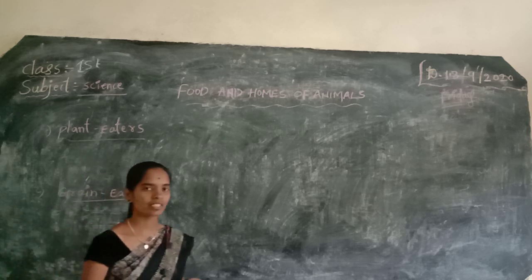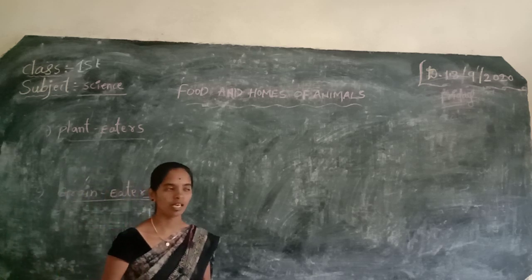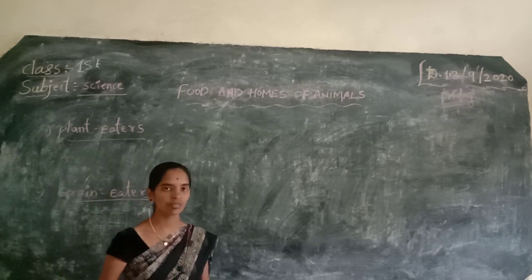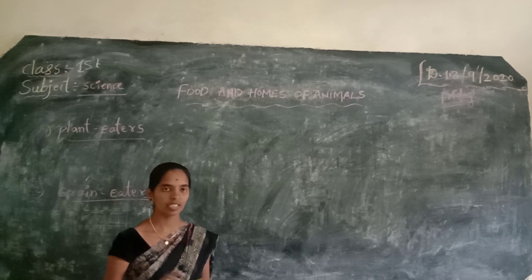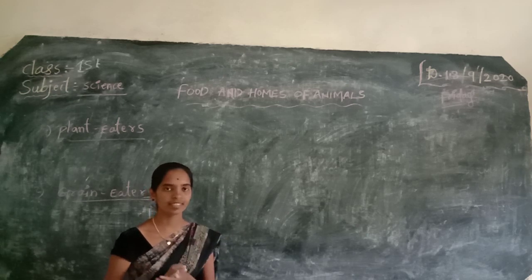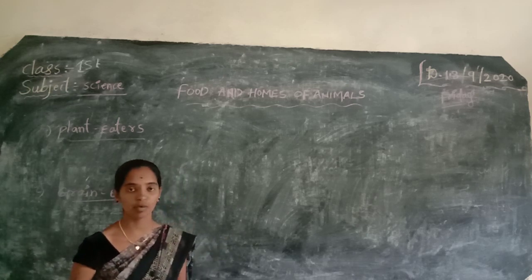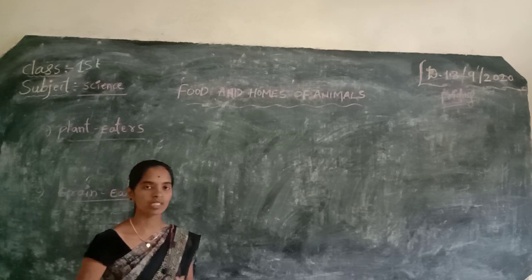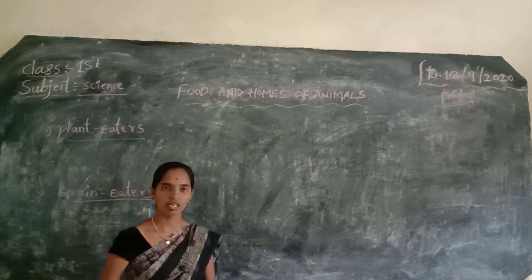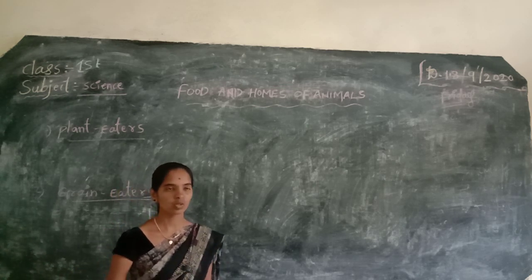Where do animals live? Animals live on land, in water, in plains, in hill areas, hill mounds and mountains. So animals come all over the world.